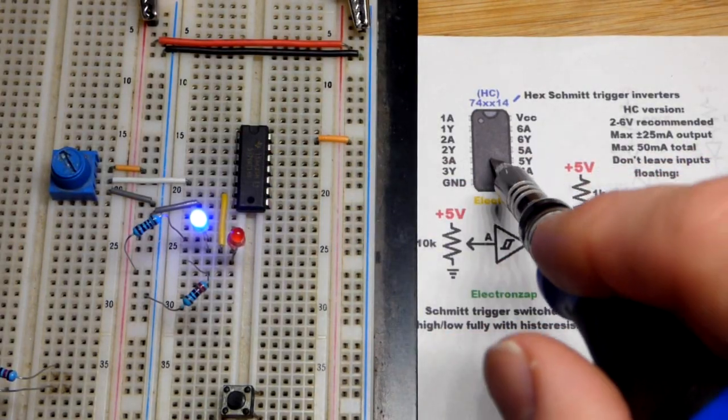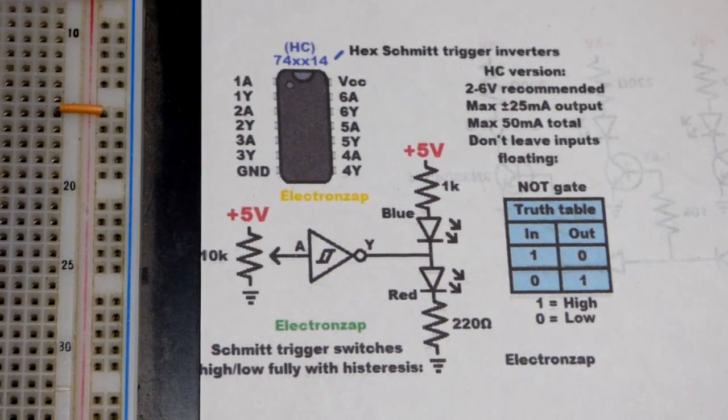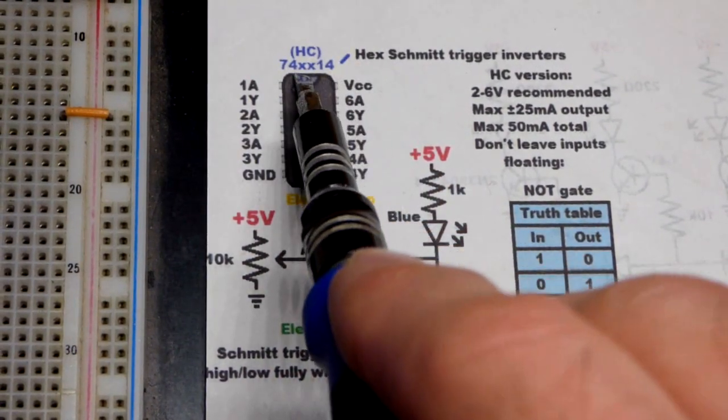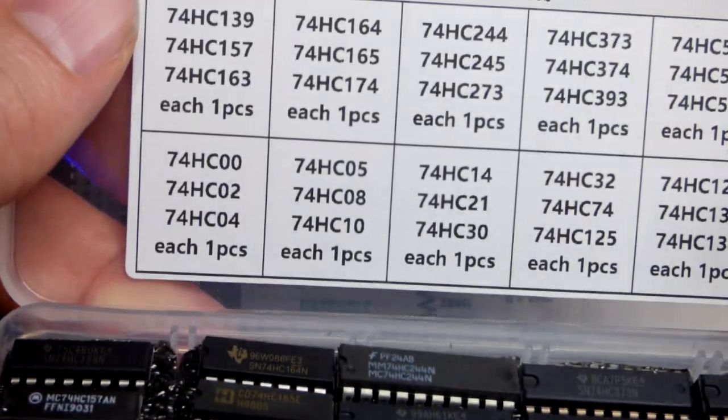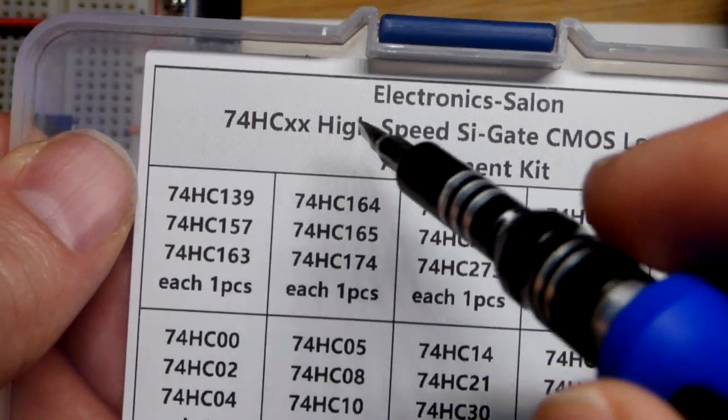So now in this video we're going to take a quick look at a practice circuit that I made here with the 74HC14. So that's a 7400 series integrated circuit and I actually got it out of this kit here. I got more elsewhere of this particular integrated circuit.